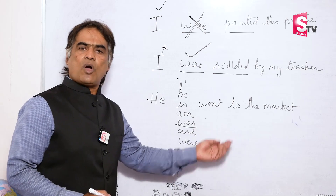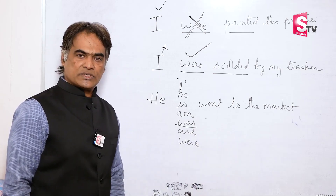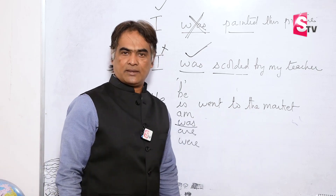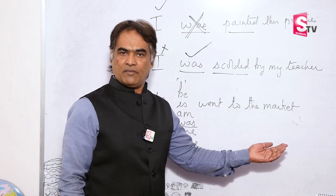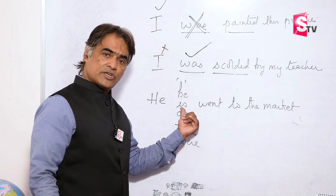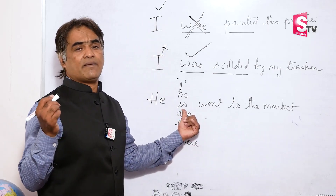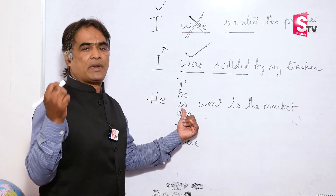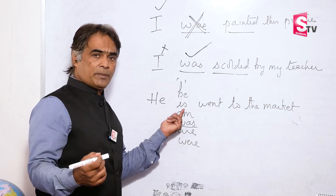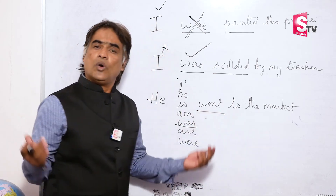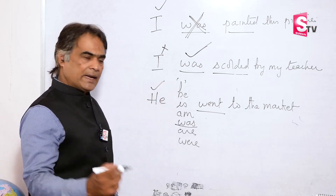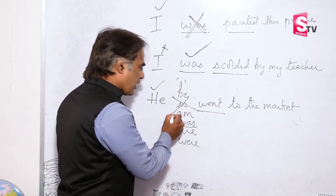Here is one more wrong sentence framed by a lot of students: 'He is went to the market.' This is a mistake. Now to understand whether 'is' is required or not, apply the same trick. Apart from the B form of verb, the other verb here is 'went.' Who did it? He did it. When he did it, 'is' is not required.